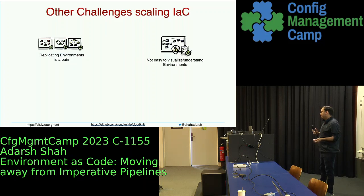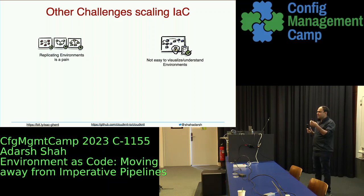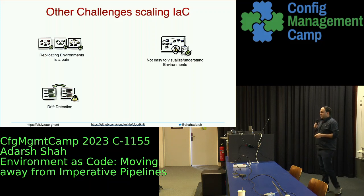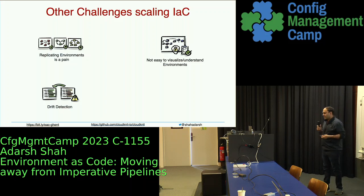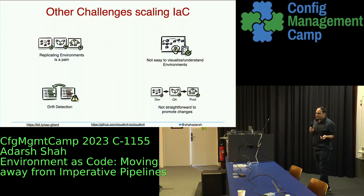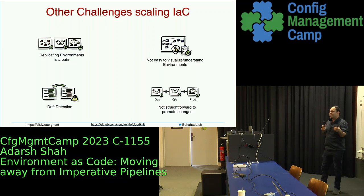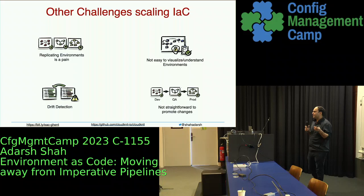It's also not easy to visualize and understand — all these tools are CLI-based, some have APIs, but how do I know how those pieces are connected and what the status of those is? It's very difficult to get that kind of information from pipelines. And it's not straightforward to promote changes. I've heard people say, 'I have to go to five different places where my Terraform or Helm or Customize is, and figure out how to promote my last change from dev to staging, QA, and eventually prod.' It just becomes challenging.